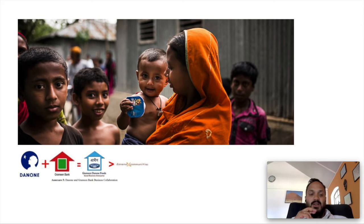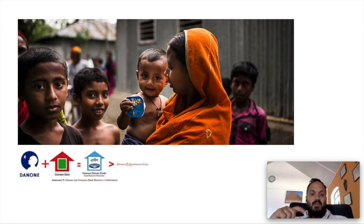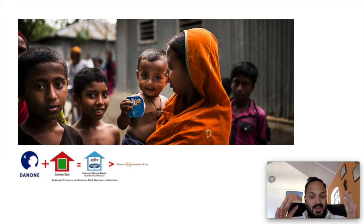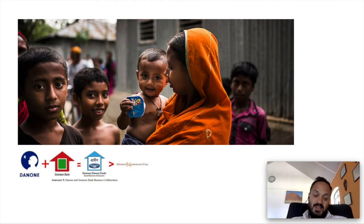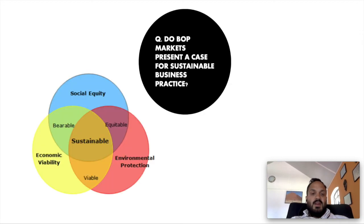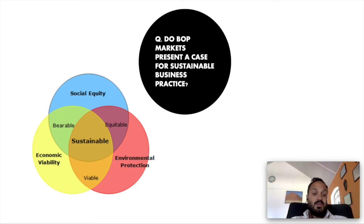Another interesting example: Danone, known for yogurts and dairy products, partnered with Grameen Bank to make really affordable yogurt for bottom of the pyramid markets, offering nutrition that kids need to grow effectively. That's the social angle — but they were also able to make it profitable. They simplified the product and ingredients, likely used local suppliers to keep packaging costs down, and started selling that yogurt. This ties in with the sustainability lecture — within sustainability we're not just trying to have an economic impact, but also a balance with social and environmental needs.